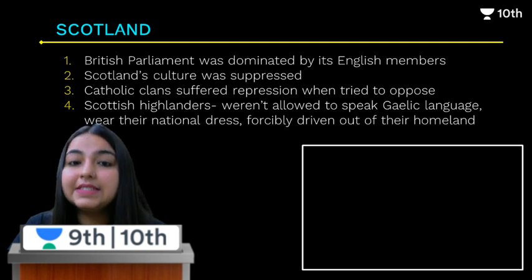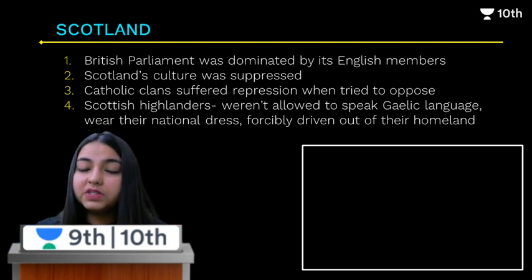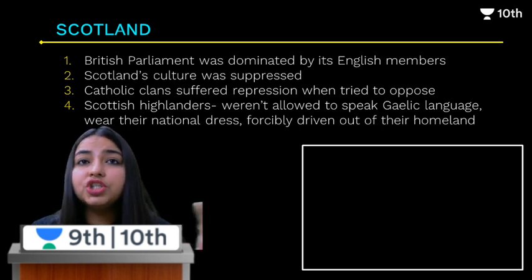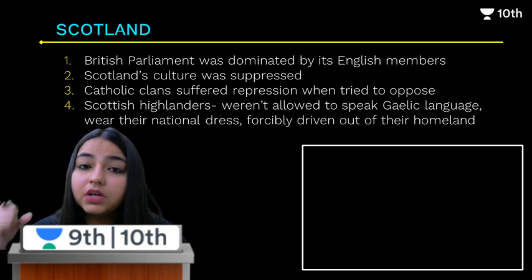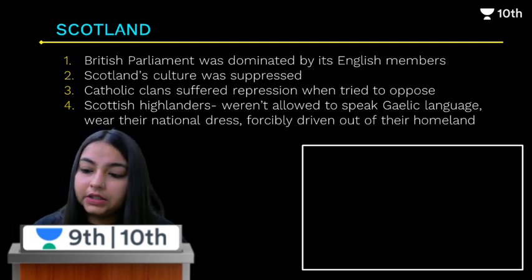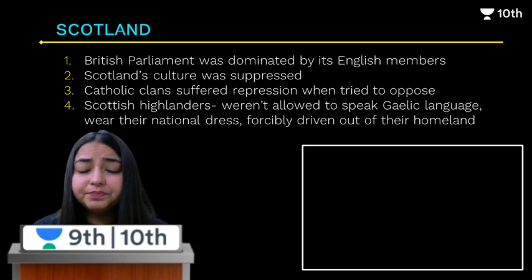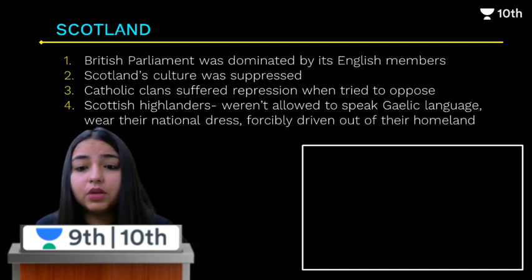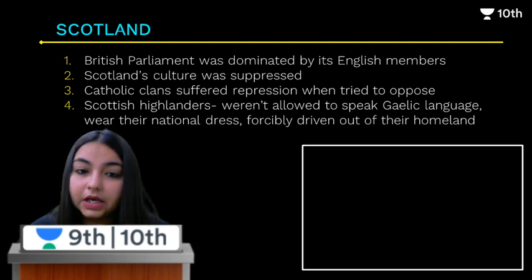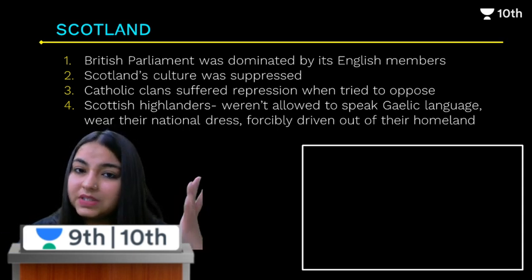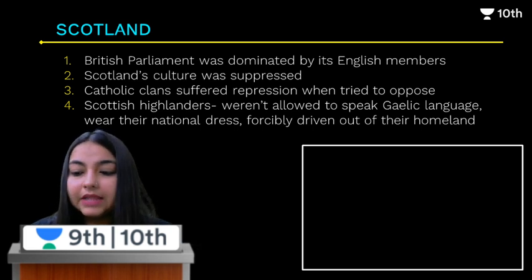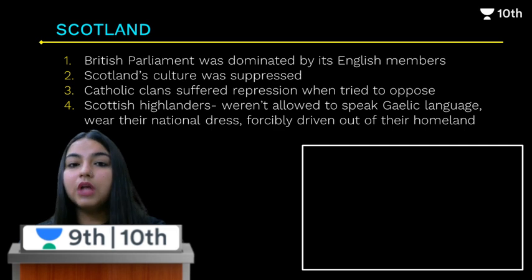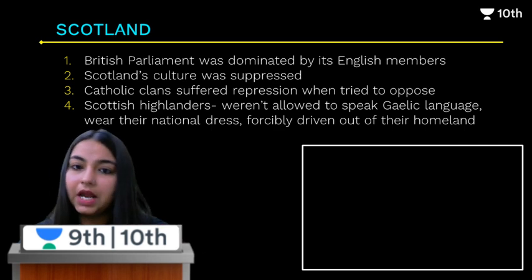Whenever the Scots tried to oppose the English, they were suppressed and put down. That was how Scotland was eventually incorporated into Britain. Moving on, something similar happened with Ireland. The people of Ireland were divided into two categories — Catholics and Protestants. The English supported the Protestants, and gradually the Protestants developed control with the backing of the English. However, the Catholics revolted many times against the English.